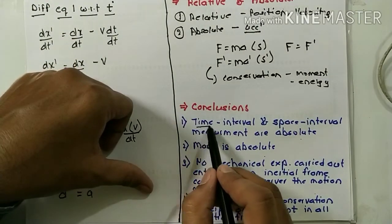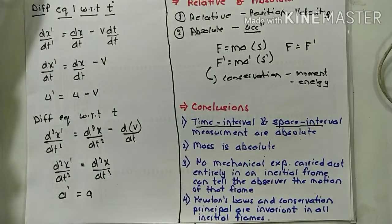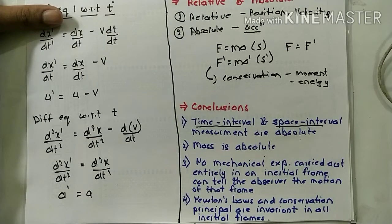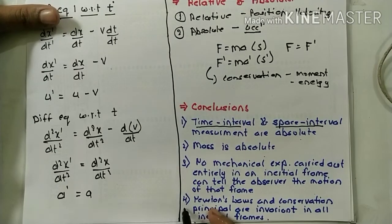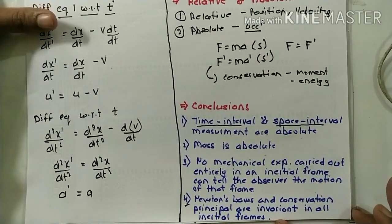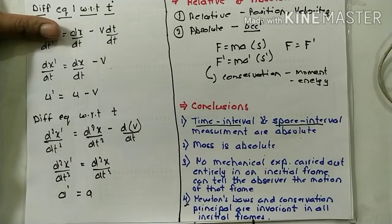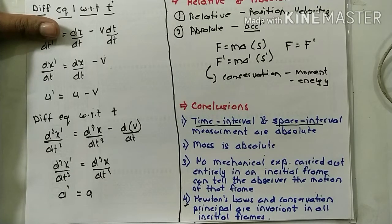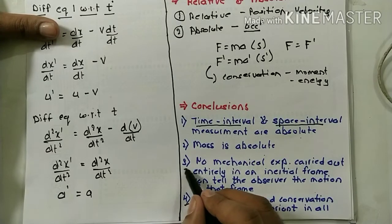There are many conclusions we can make. The time interval and space interval measurements are absolute — they do not depend on the frame of reference. Mass is also absolute; it does not depend on the frame of reference. Newton's laws and the conservation principles are invariant or absolute in all inertial frames of reference. Because of this, you cannot carry out any mechanical experiment to find the velocity of the frame of reference you are traveling in.